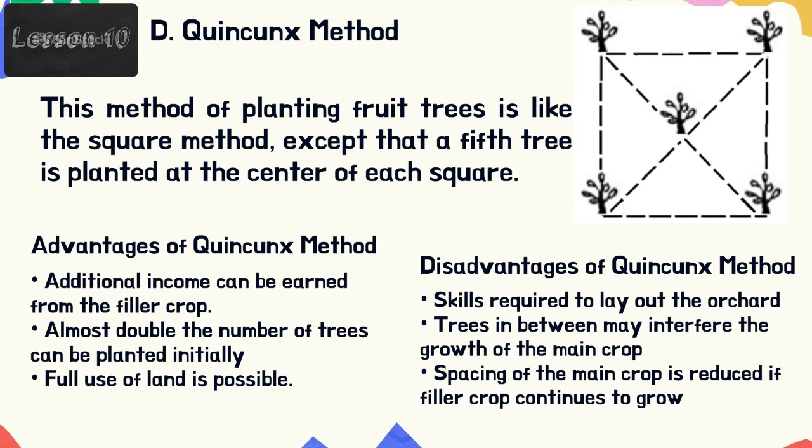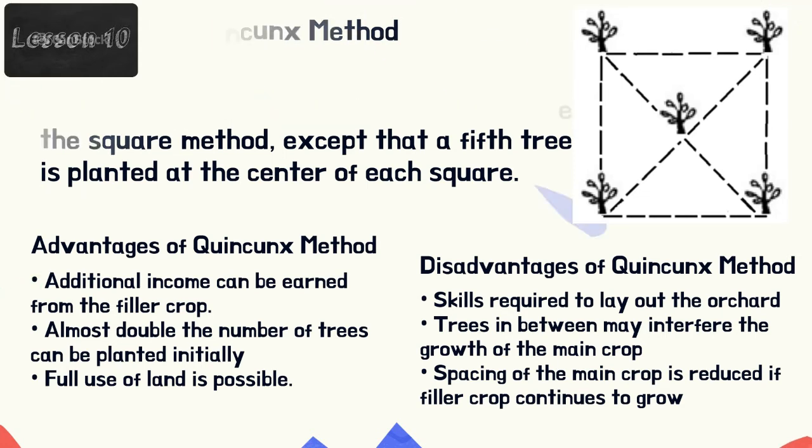Disadvantages of the quincunx method: skill is required to lay out the orchard; trees in between may interfere with the growth of the main crop; and the spacing of the main crop is reduced if the filler crop continues to grow.